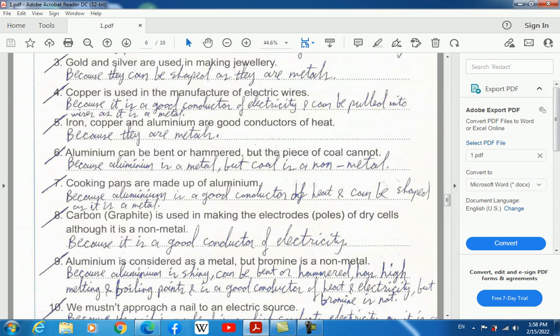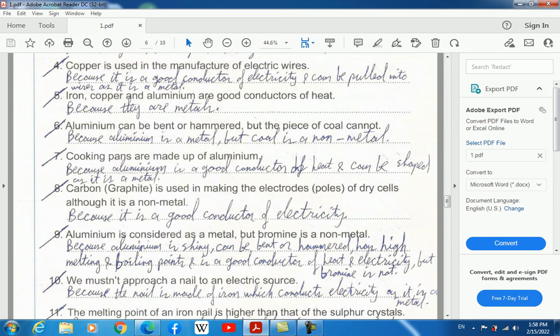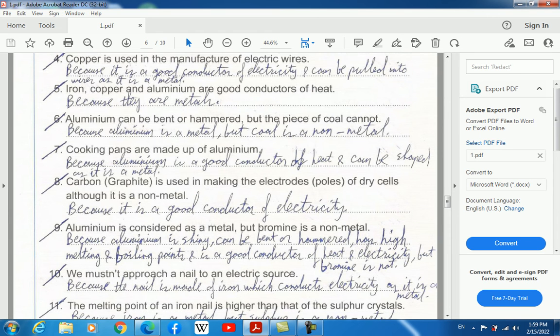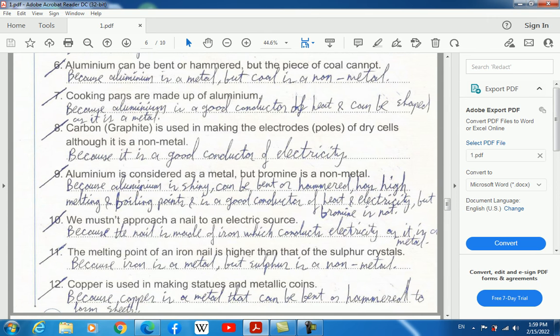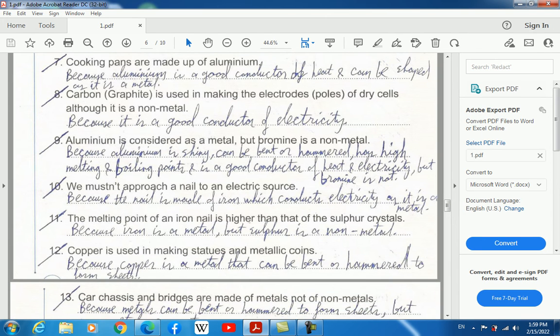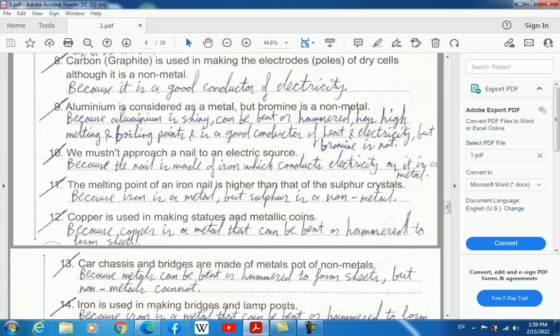Three, gold and silver are used in making jewelry because they can be shaped as they are metals. Four, copper is used in the manufacture of electric wires because it's a good conductor of electricity and can be pulled into wires as it's a metal. Five, iron, copper, and aluminum are good conductors of heat because they are metals. Six, aluminum can be bent or hammered but a piece of coal cannot because aluminum is a metal but coal is a non-metal. Seven, cooking pans are made up of aluminum because aluminum is a good conductor of heat and can be shaped as it's a metal.